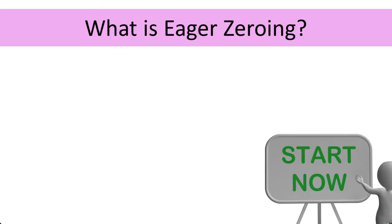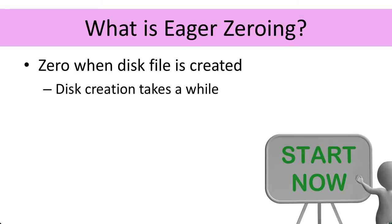Consequently, there is an option for eager zeroing. With eager zeroing, when you create the VMDK file, all of the zeros are written to it as it's created. So if you created a 400 gigabyte VMDK file, we've got to write 400 gigabytes of zeros to that VMDK file when it is created. So when you click create virtual machine, or when you click finish on the add disk to virtual machine wizard, that's when all the zeroing happens — lots of data gets written to the disk at that point.